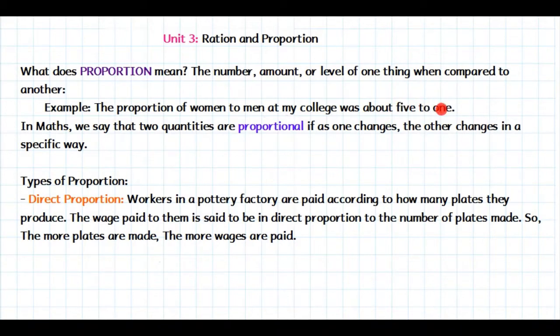So, this means that for each man that you can see there, there were 5 women. And these two quantities are said to be proportional. In math, we say that two quantities are proportional if, as one changes, the other changes in a specific way. We are going to see that there are different ways in which these two quantities can change.